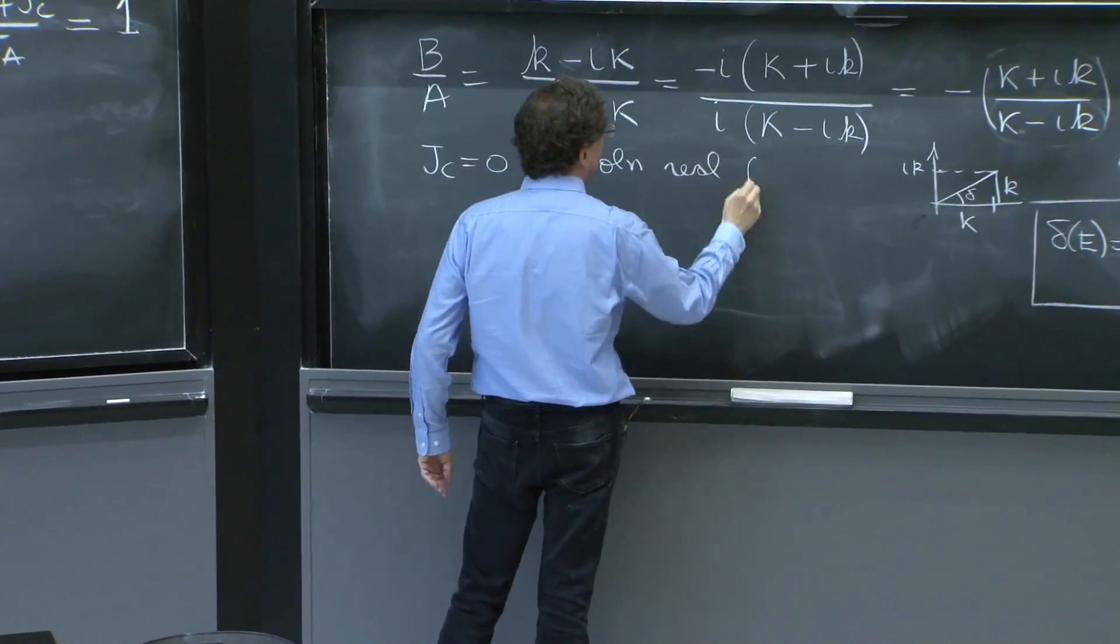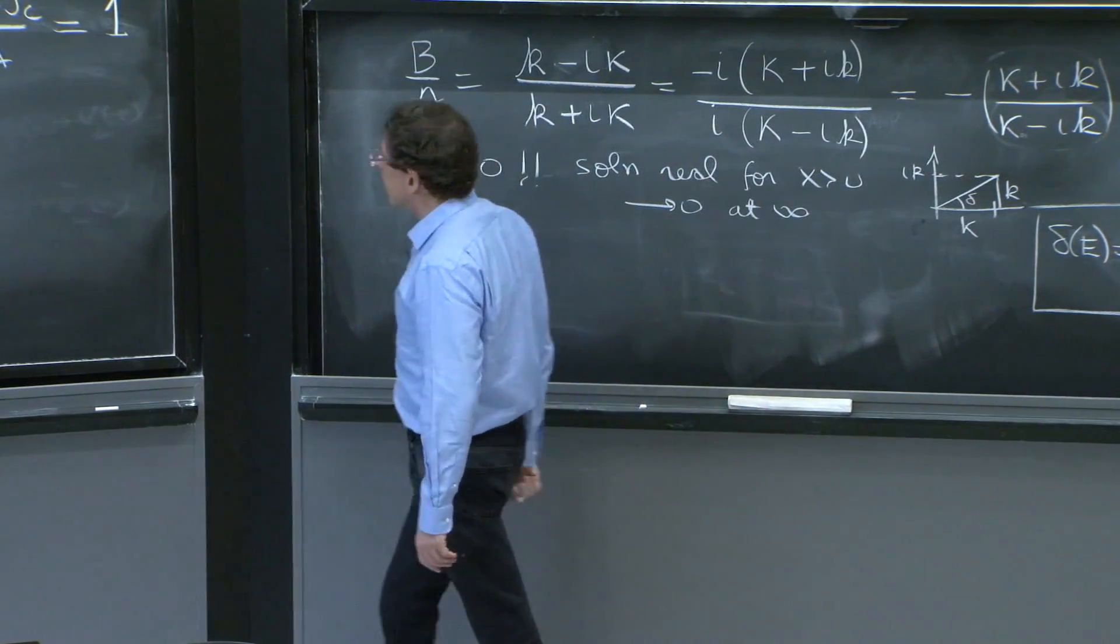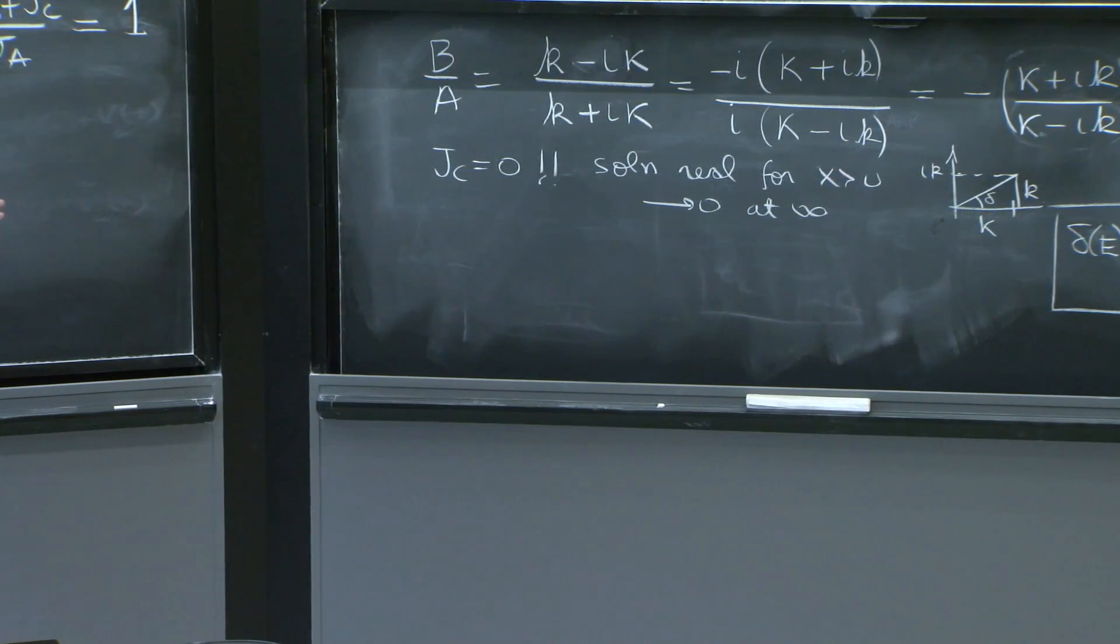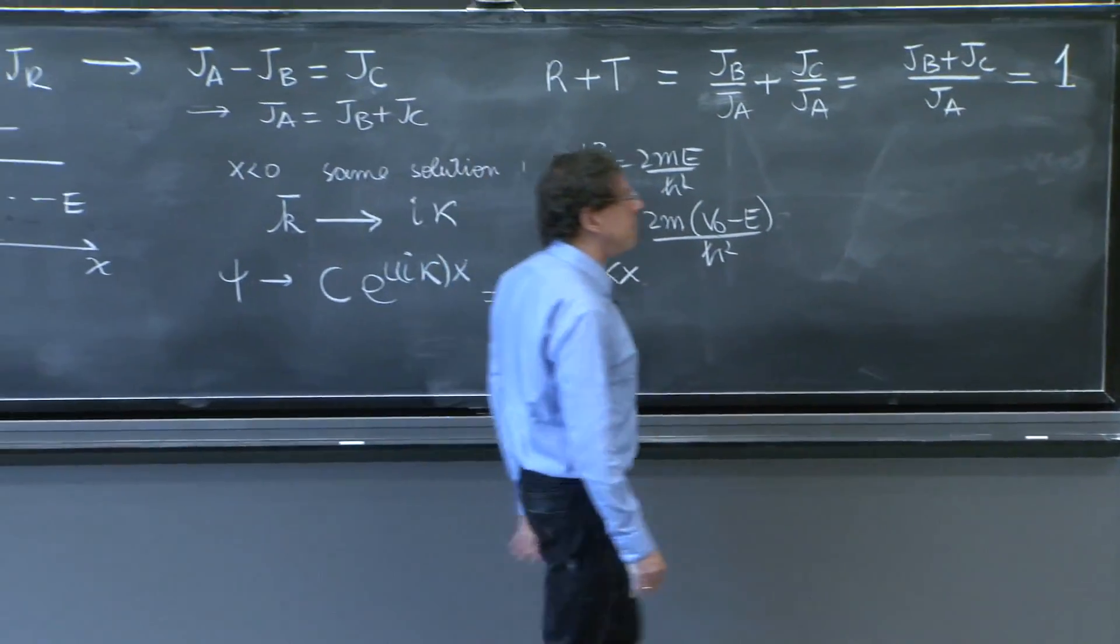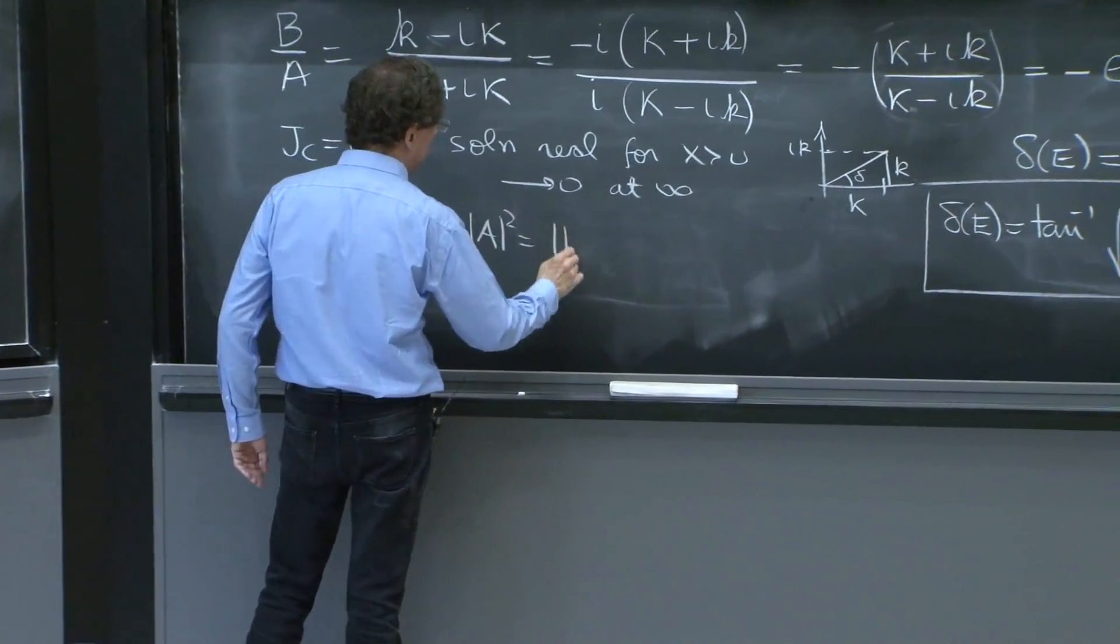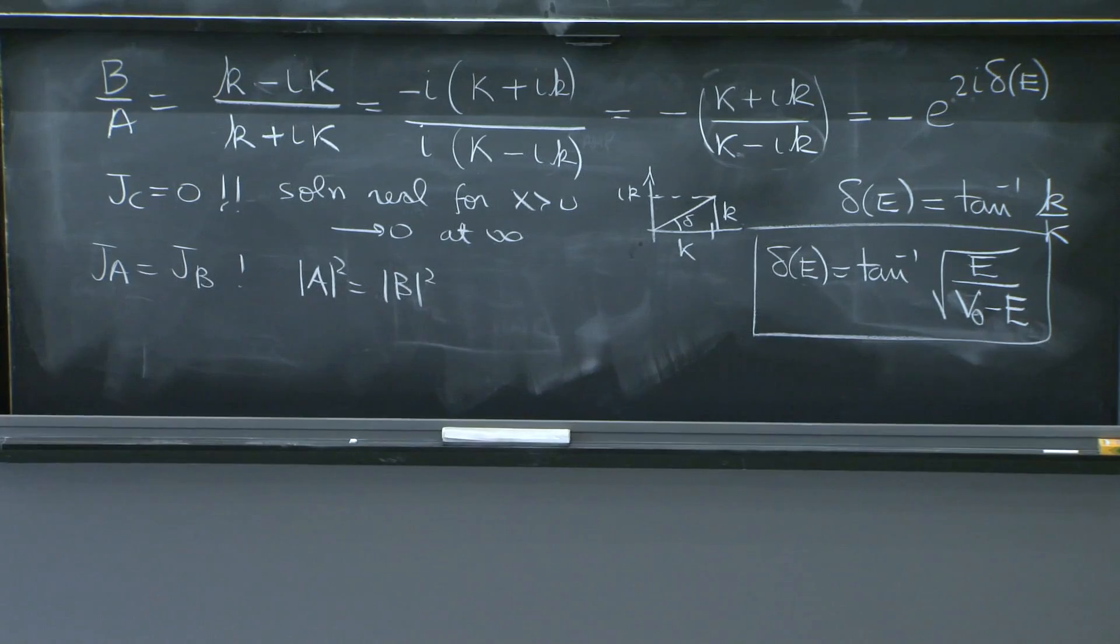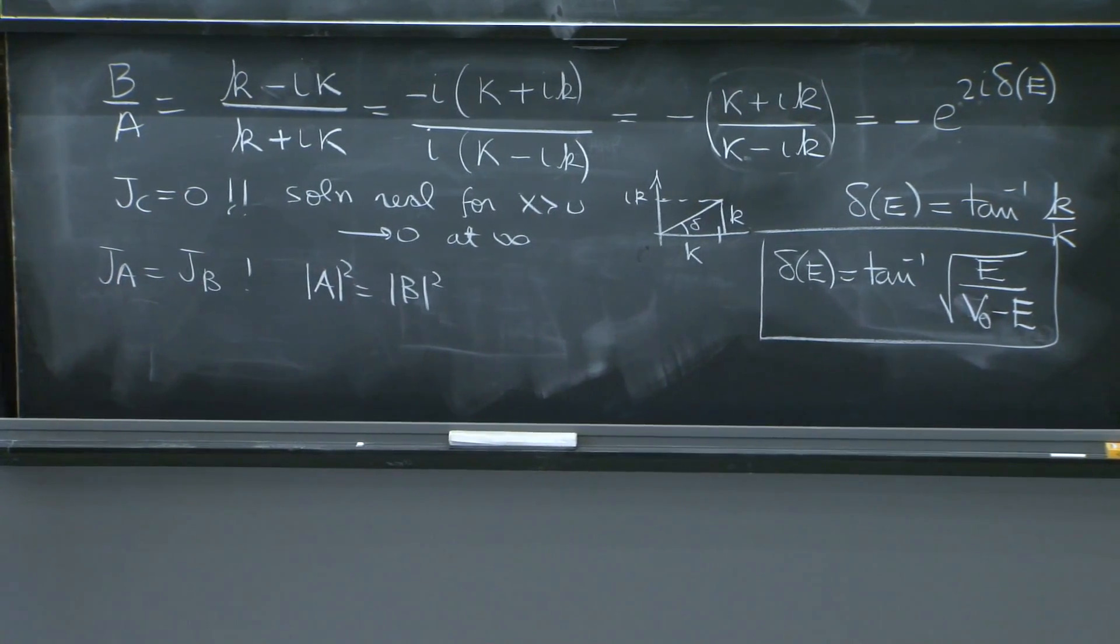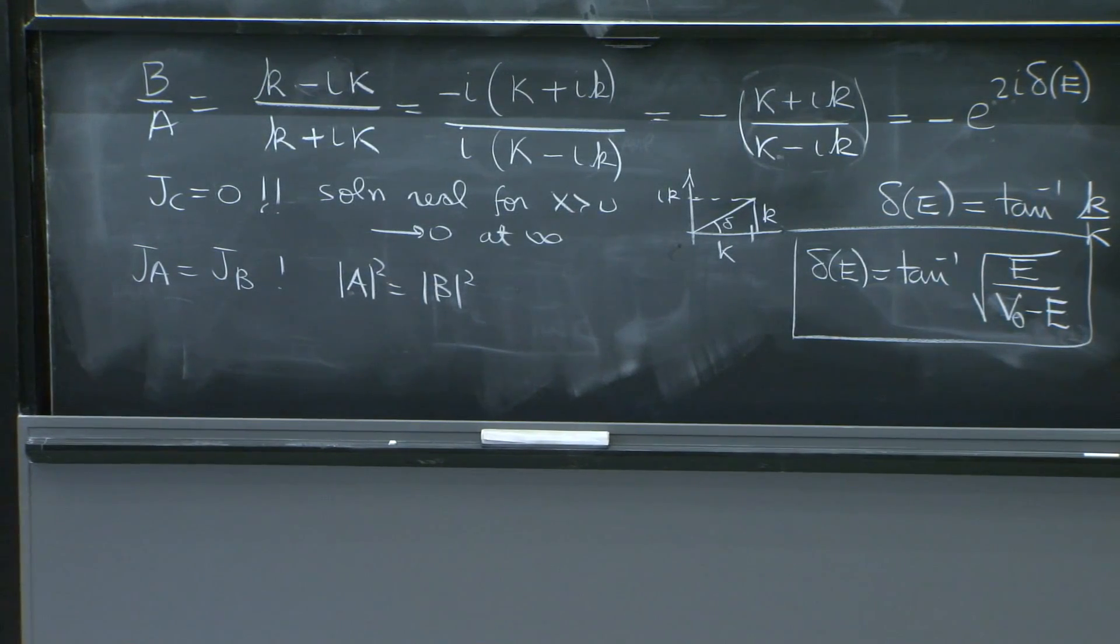Because there's no current here, no current there, no current there, because the solution drops down. But it's a real solution anyway, so there's no current there. So J_A, J_C is equal to 0. Solution is real for x greater than 0, and anyway, goes to 0 at infinity. So the fact that it's real is a mathematical nicety that helps us realize that it must be 0. But the fact that there's no current far away essentially is telling you it better be 0. So if the current J_C is 0, J_A must be equal to J_B. And therefore, that means a squared is equal to b squared. And happily, that's what happened, because b over a is a complex number of magnitude 1.